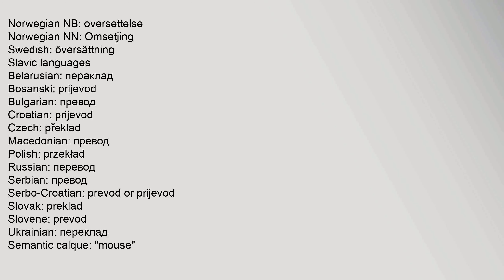Slavic languages with calked words for translation: Belarusian, peraklad; Bulgarian, prevod; Croatian, prijevod; Czech, překlad; Macedonian, prevod; Polish, przekład; Russian, perevod; Serbian, prevod; Serbo-Croatian, prijevod or prevod; Slovak, preklad; Slovene, prevod; Ukrainian, pereklad.